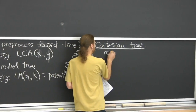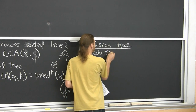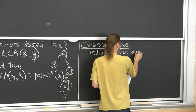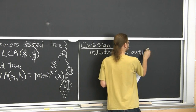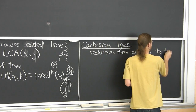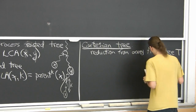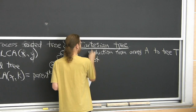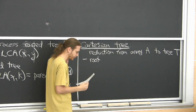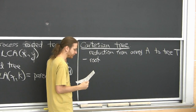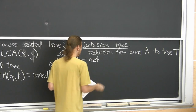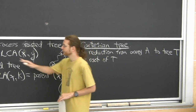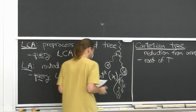Our goal is constant time linear space for all these problems. Constant time is easy with polynomial space — you could just store all the answers, since there are only n² different queries. Quadratic space is easy; linear space is the hard part. Let me tell you about a nice reduction from an array to a tree called the Cartesian tree, going back to Gabow, Bentley, and Tarjan in 1984.